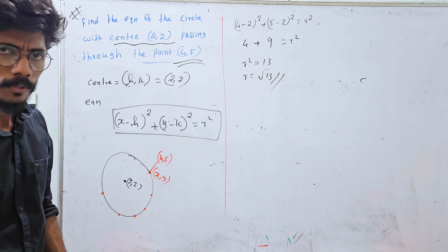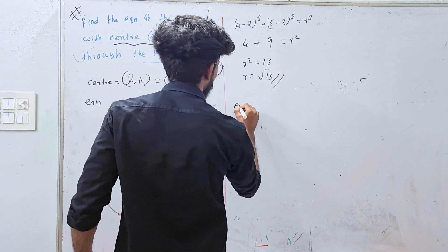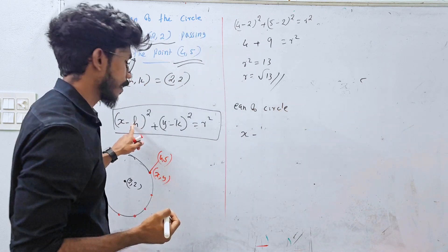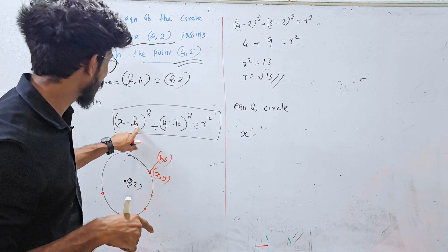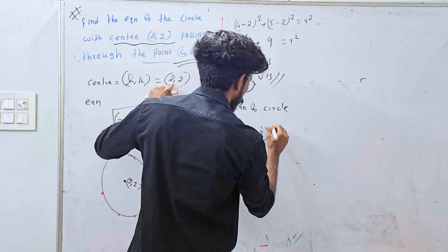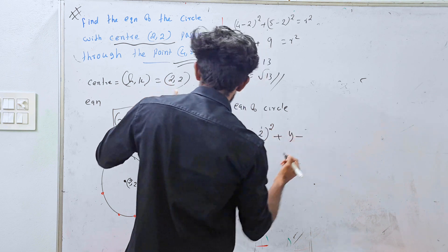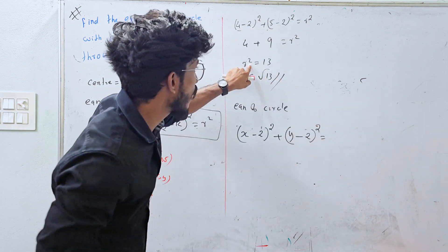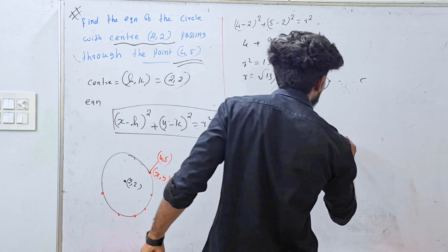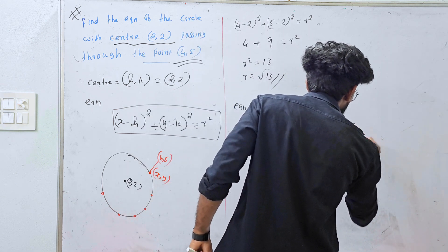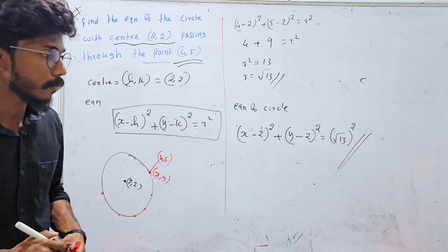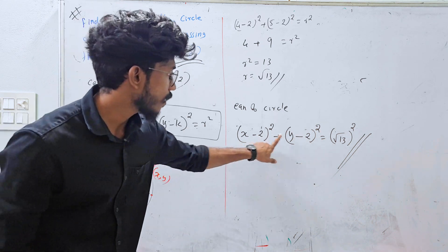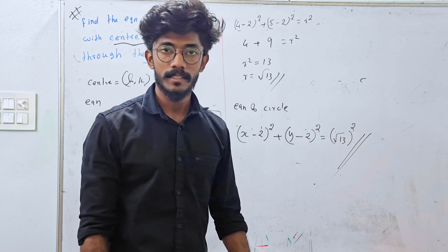Clear? So the equation of the circle is: x minus 2, the whole square, plus y minus k, the whole square, equal to r squared equals 13. This is the equation of the circle with center 2, 2 and radius root 13.